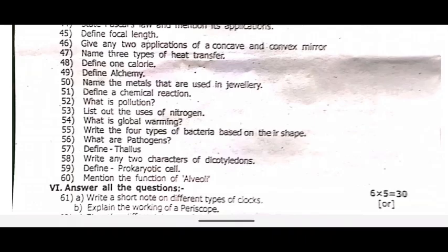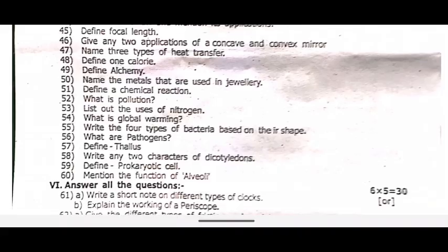Fifty-five, write the four types of bacteria based on their shape. Fifty-six, what are pathogens? Fifty-seven, define thallus. Fifty-eight, write any two characteristics of dicotyledons. Fifty-nine, define tissue. Sixty, mention the function of alveoli.